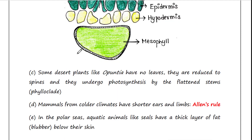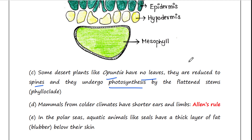Some desert plants like Opuntia have no leaves — they are reduced to spines, and they undergo photosynthesis through their flattened stems. This modification is called phylloclade.